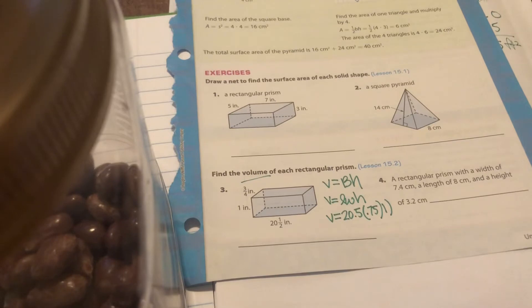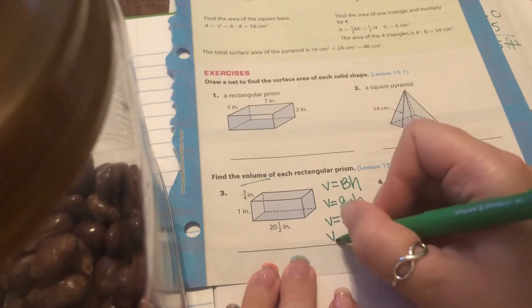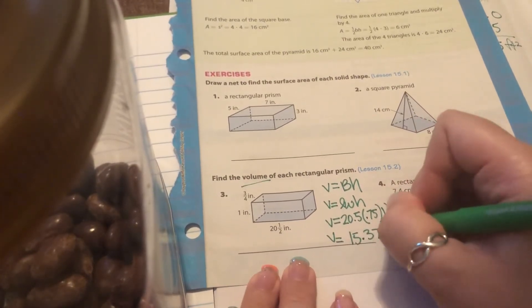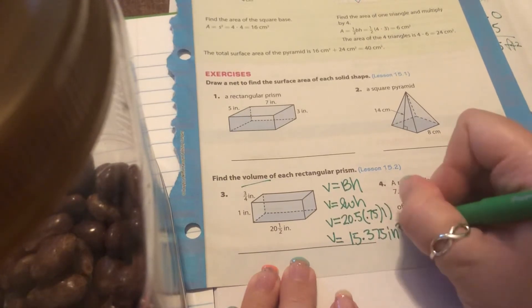You have 20.5 times 0.75 times one, which would be the same thing, so you don't even need to bother. It's 15.375, and we're talking about inches, so inches cubed.